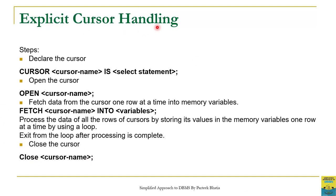To summarize, to use an explicit cursor a programmer must first declare the cursor in the declare section using: CURSOR cursor_name IS SELECT statement. Then open the cursor in the begin section using: OPEN cursor_name. Then construct a loop to fetch one row of the cursor at a time into memory variables, and exit the loop after all rows are processed. Finally, close the cursor using: CLOSE cursor_name. The open, fetch, and close statements are used in the begin section, while the cursor declaration goes in the declare section.